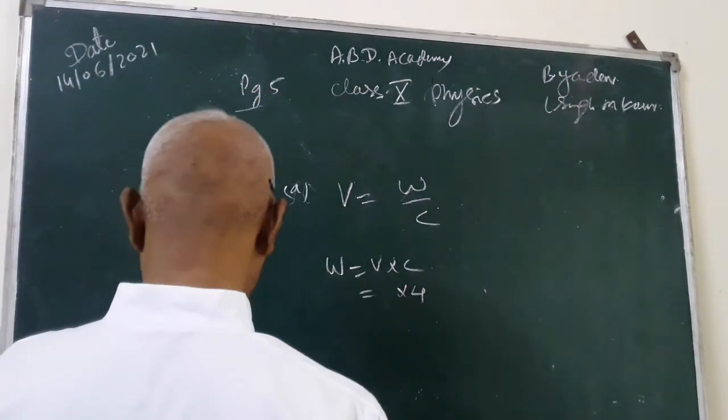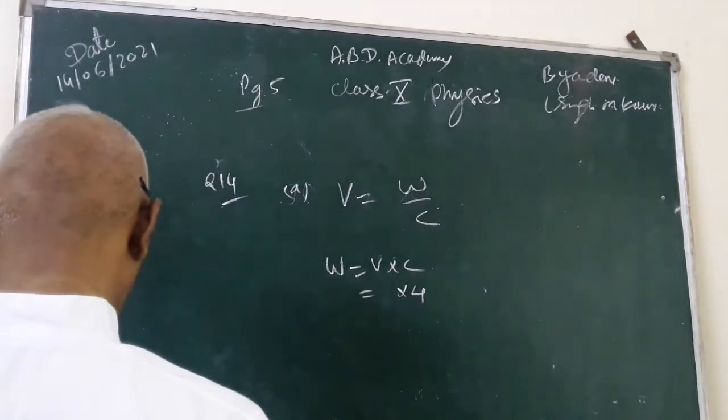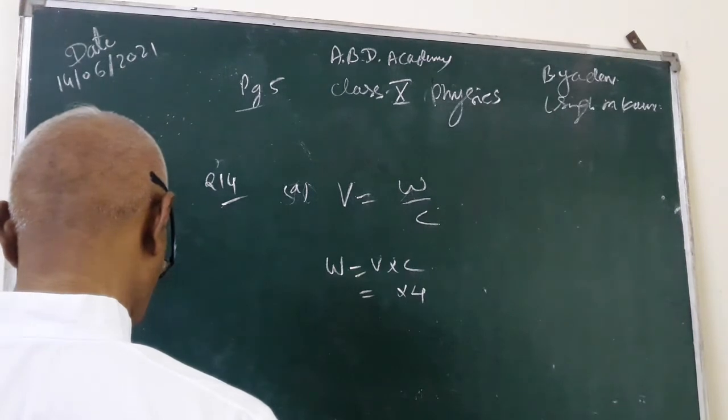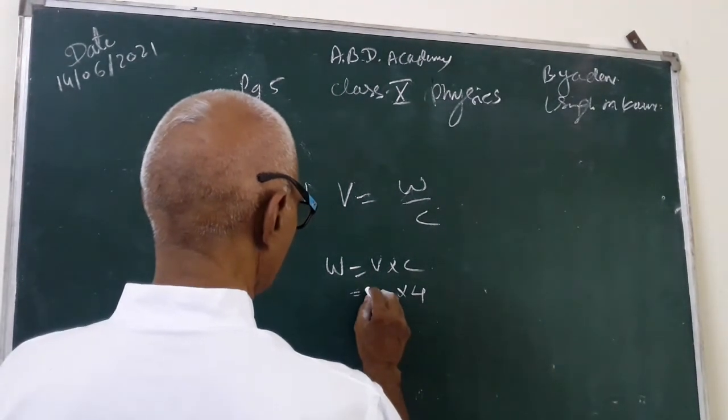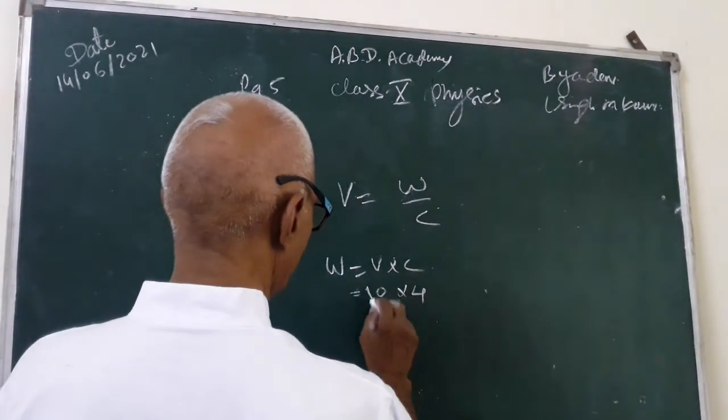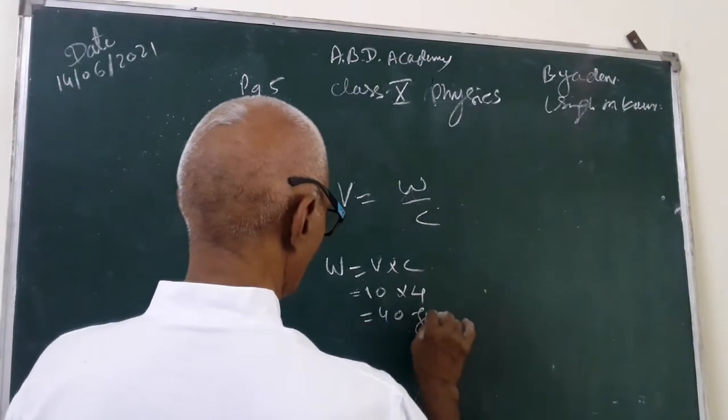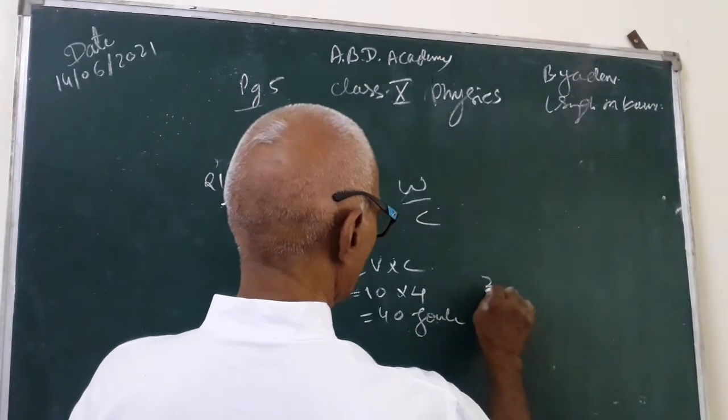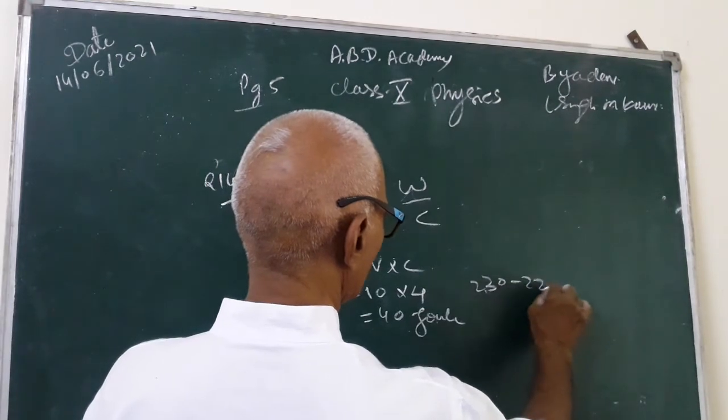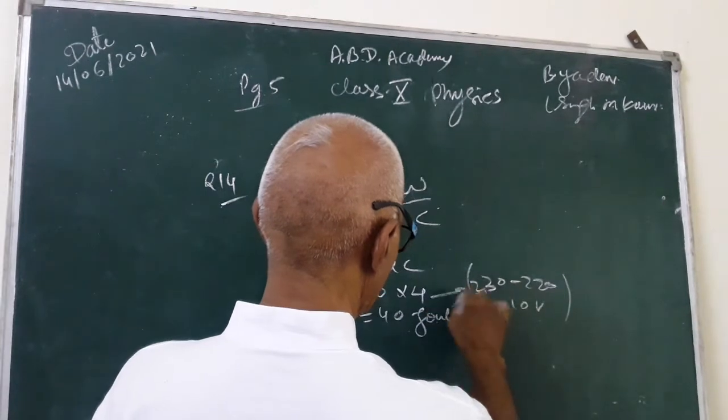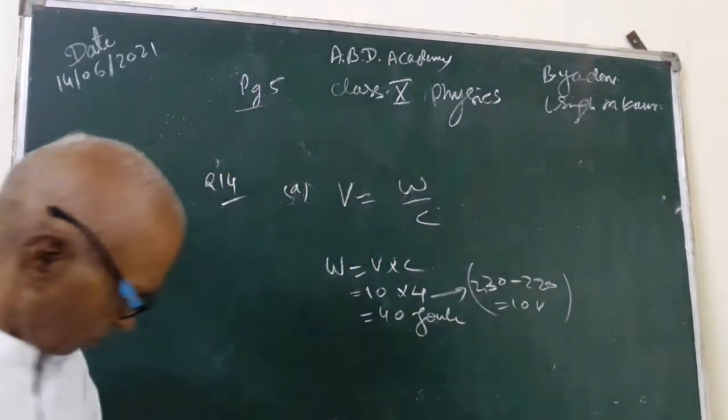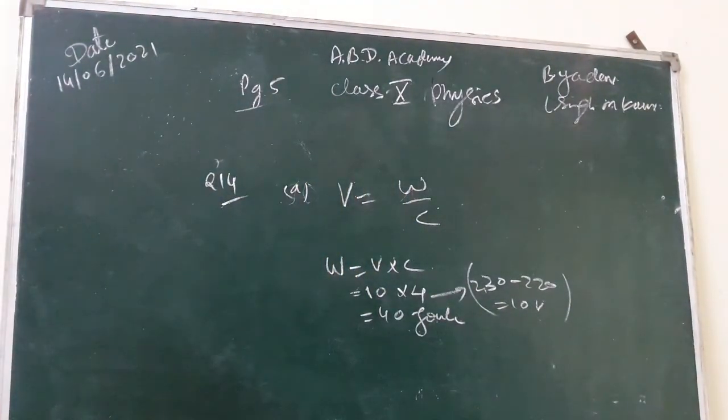And second part of question 14 is calculate work done in moving charge of 4 coulomb from a point at 220 volt to another point at 230 volt. Difference of potential is 230 minus 220 that is 10 volt. So it will be 40 joule. We will take here 10 volt. It is question number 14.